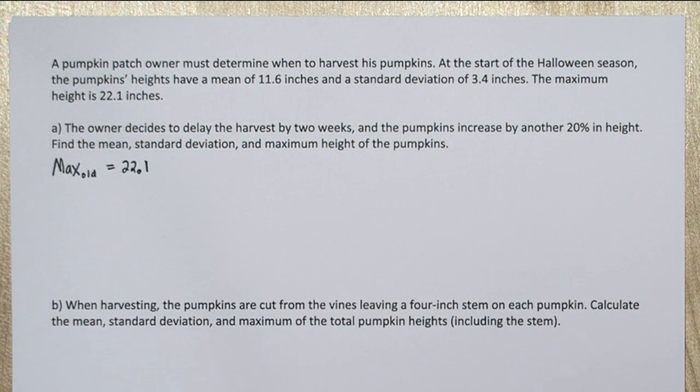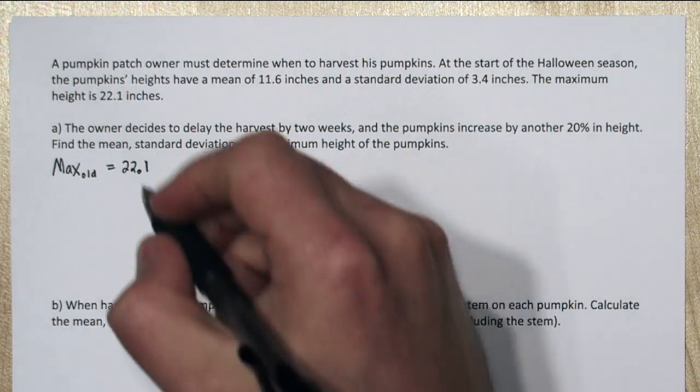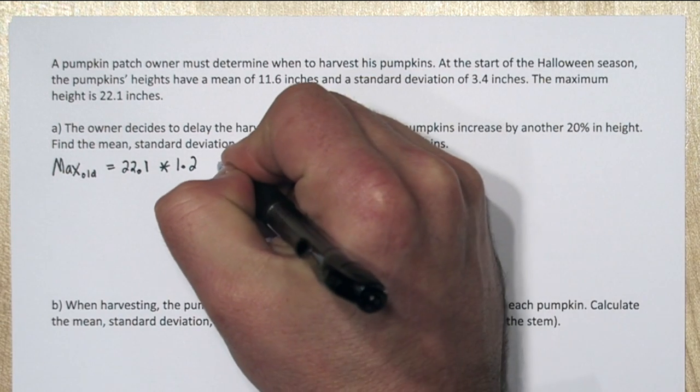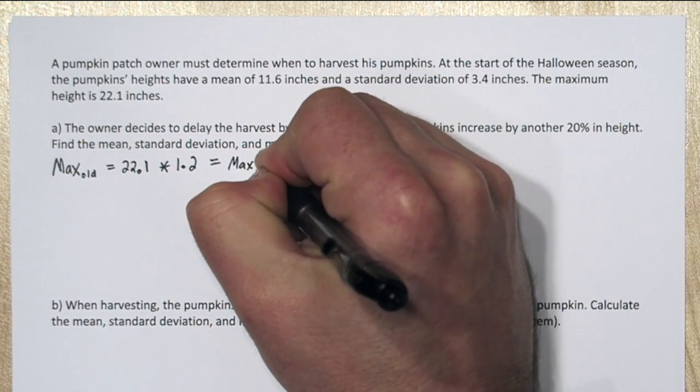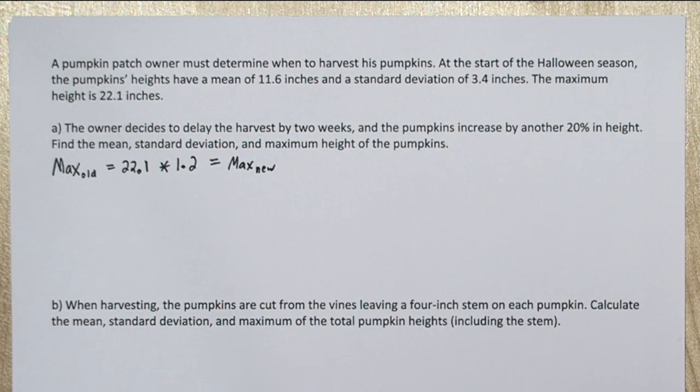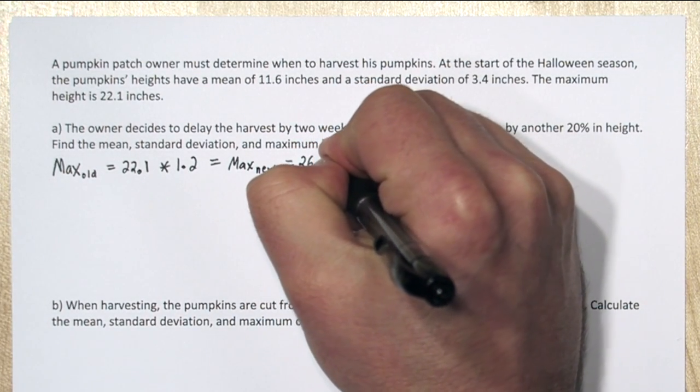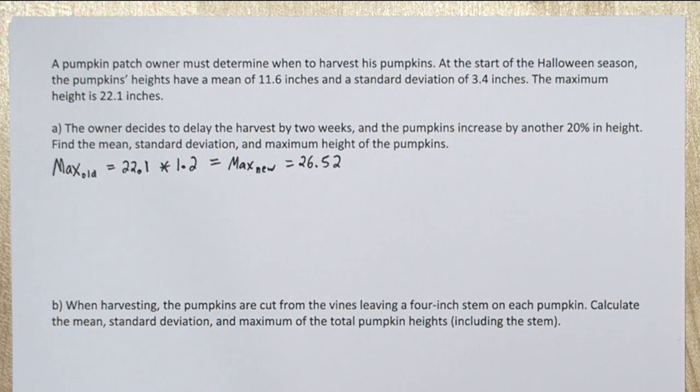Now if this pumpkin increases another 20% in height, we can multiply it by 1.2 to get our new maximum, which we'll call max sub new. So the new maximum is going to be 26.52 inches.